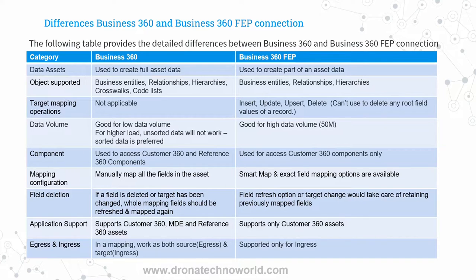Data volume is a major criterion for selecting a connection. For low volume, such as loading reference data, you can use the Business 360 connector. For higher volume — like customer data or product data — use the Business 360 FEP connector, as it handles higher volumes and has been tested for 50 million records. If you load higher volume using the Business 360 connection, make sure the data is sorted — this is critical. For applications supported: Business 360 connector can load or export data from Customer 360 as well as Reference 360, while Business 360 FEP connector is only for Customer 360.